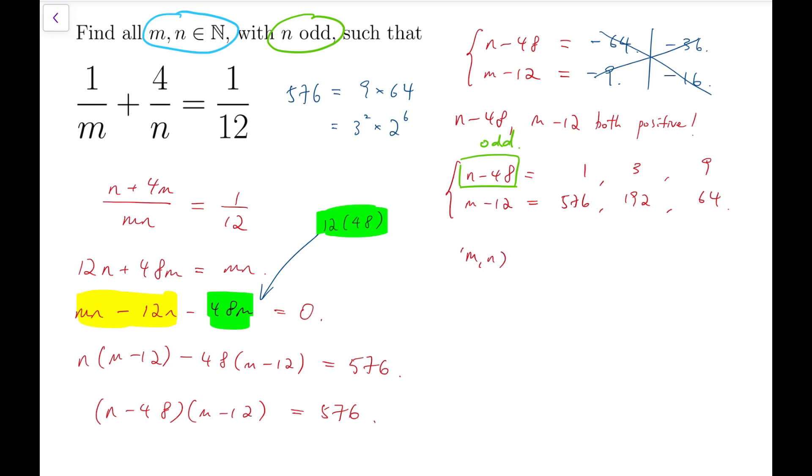So, that means m and n have 3 pairs, which are 588 and 49.